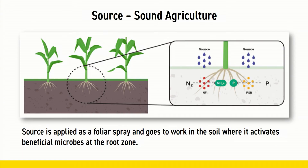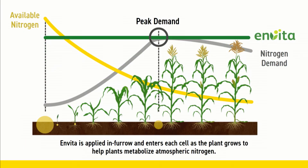Source, applied foliar, is a biology that stimulates the soil's native biology, increasing their activity and productivity — getting more out of the native soil biology that exists. Invita is a biology strain added to the soil in-furrow that colonizes and enters the cells of the plant to help that plant fix its own nitrogen.